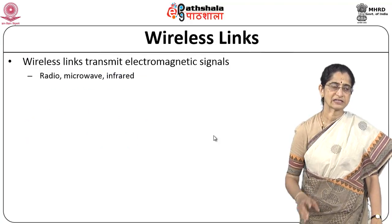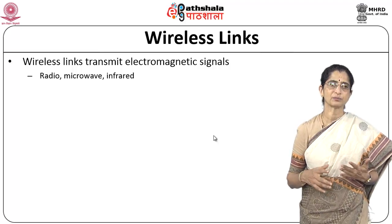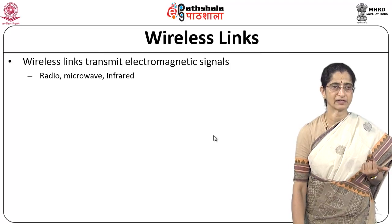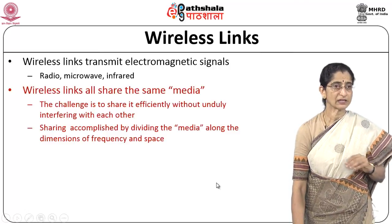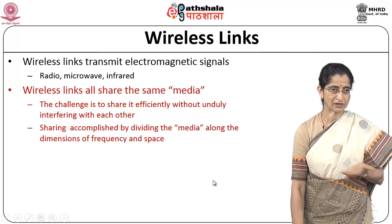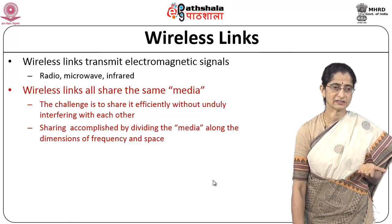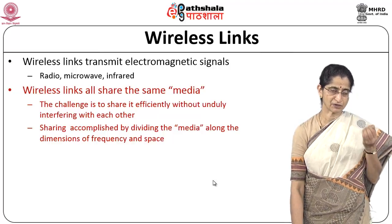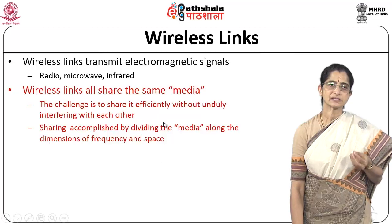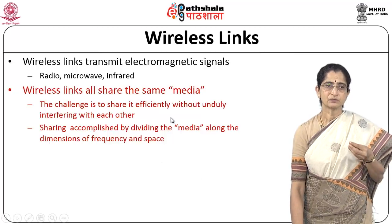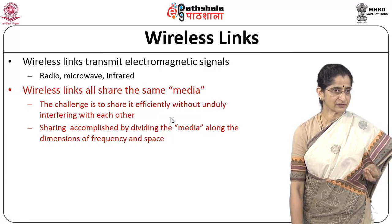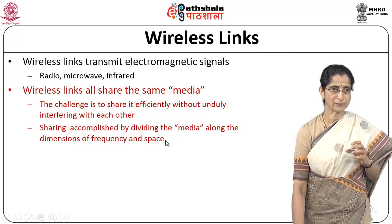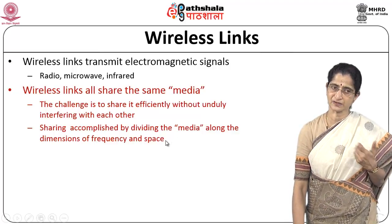When we talk of wireless links, we know that they transmit electromagnetic signals — radio frequency, microwave, or infrared signals. Wireless links typically share the same broadcast media, so everybody has to share that media. The major challenge is how efficiently we can share this media without having undue interference between one another, so that different transmitting devices do not interfere with each other. We need to figure out mechanisms to minimize that interference.